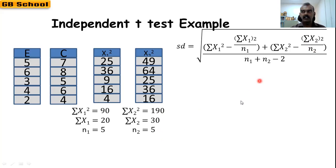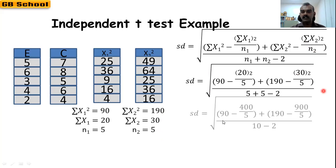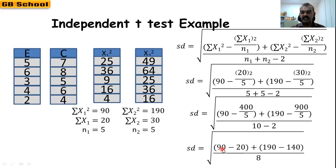Substituting all values into the formula: (90 − 20²/5 + 190 − 30²/5) / (5 + 5 − 2), which becomes √[(90 − 400/5 + 190 − 900/5) / 8] = √[(90 − 80 + 190 − 180) / 8] = √[(10 + 10) / 8].